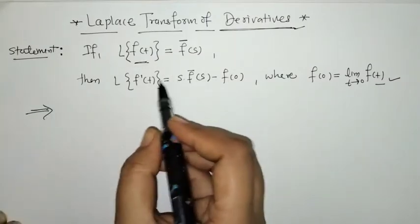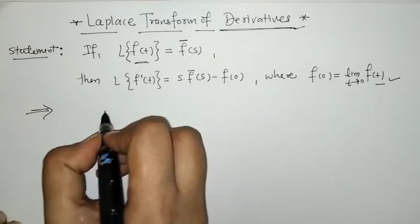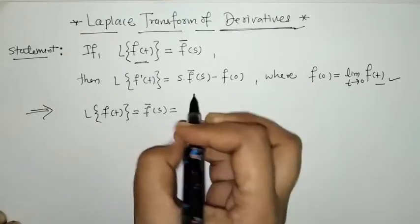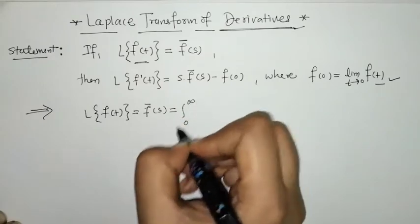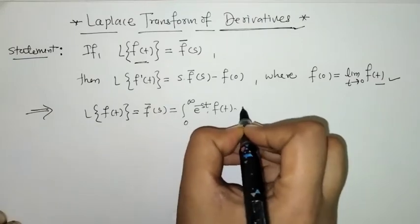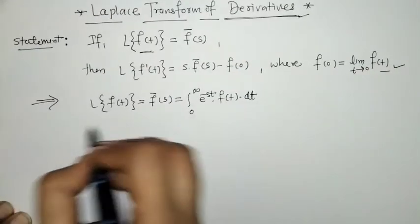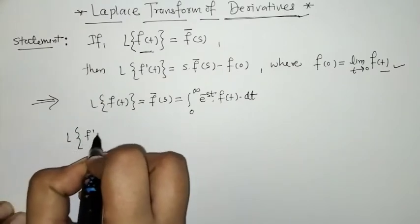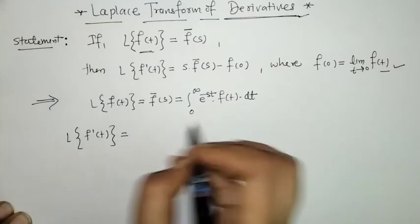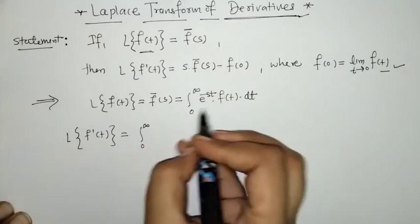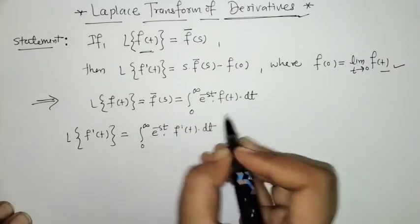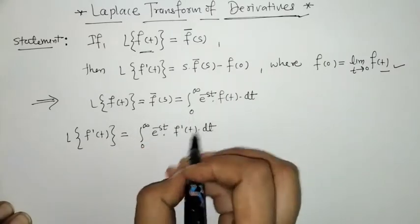Now we have to prove this statement. We have the given function f of t and its Laplace transform. We know the Laplace transform definition: this is the integral from 0 to infinity of e raised to minus s t into f of t. So the Laplace transform of f-dash of t, by this definition, is the integral of e raised to minus s t into f-dash of t.